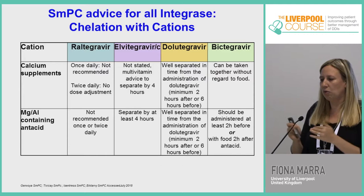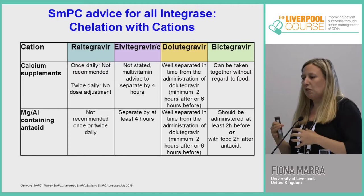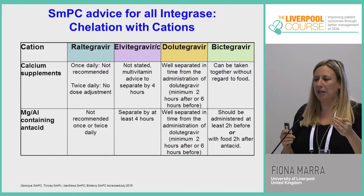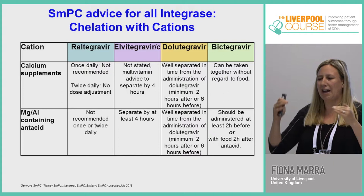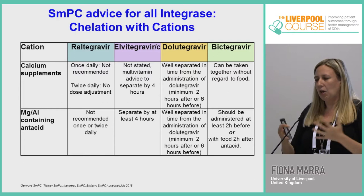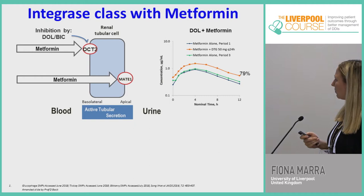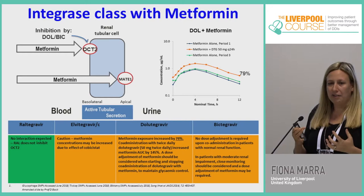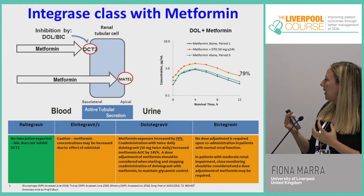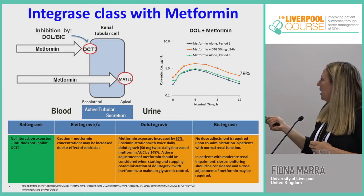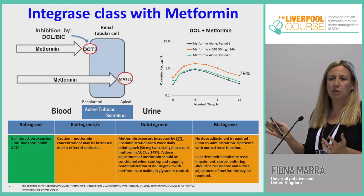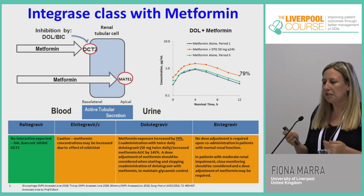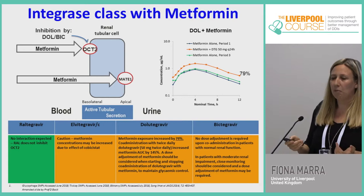Decreased levels of the integrase inhibitor occur with cation chelation interactions. It's important to advise patients taking calcium — whether over the counter or prescribed — and to follow the guidance to avoid affecting drug concentrations depending on whether it's multivitamins or higher doses. Metformin is another drug with issues: dolutegravir causes the biggest increase, 79% and 145% with the twice-daily dose. Bictegravir appears slightly better with no dose adjustment required, though it's amber in patients with moderate renal impairment — metformin must be used with caution.